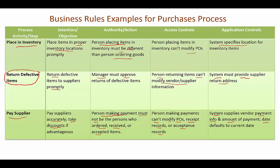Business rules are important to consider at each step in a business process. We start with the actual activity, identify what management's intent or objective is regarding that activity, and from there determine the necessary authorizations and controls — both access and application controls — that need to be put in place.